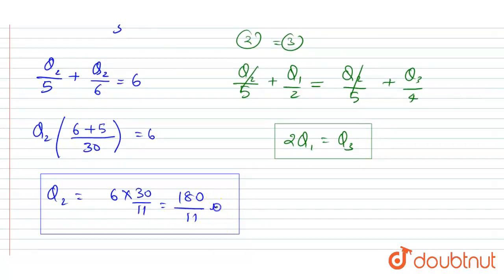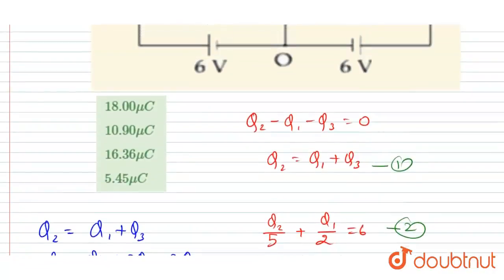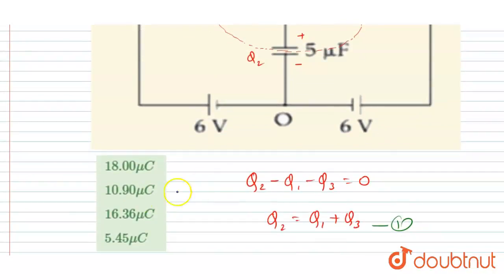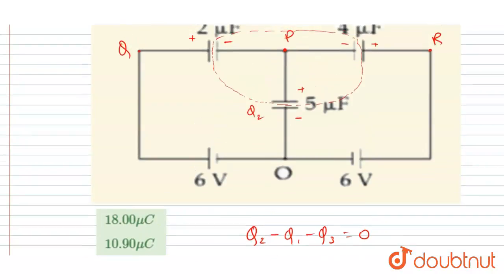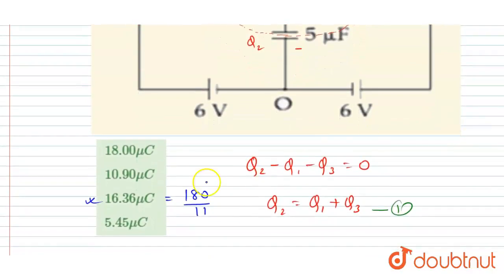The answer is 180 by 11 microcoulombs, which equals 16.36 microcoulombs. So option C is the correct answer — 180 by 11 is the charge on the 5 microfarad capacitor, equal to 16.36 microcoulombs.